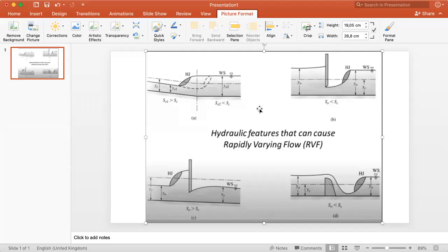So a rapidly varying flow is a jump in the water level, also known as a hydraulic jump, and it might happen due to different scenarios.